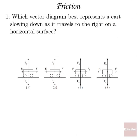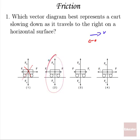Number one: which vector diagram best represents a cart slowing down as it travels to the right on a horizontal surface? If its velocity is to the right and it's slowing down, it must have an acceleration vector to the left, which means the net force must be to the left. So I'm looking for diagrams with a net force to the left. Number one has a net force to the right. Number two has friction a little bit bigger than the forward force, giving a net force to the left — so that could be the cart slowing down as it moves to the right.